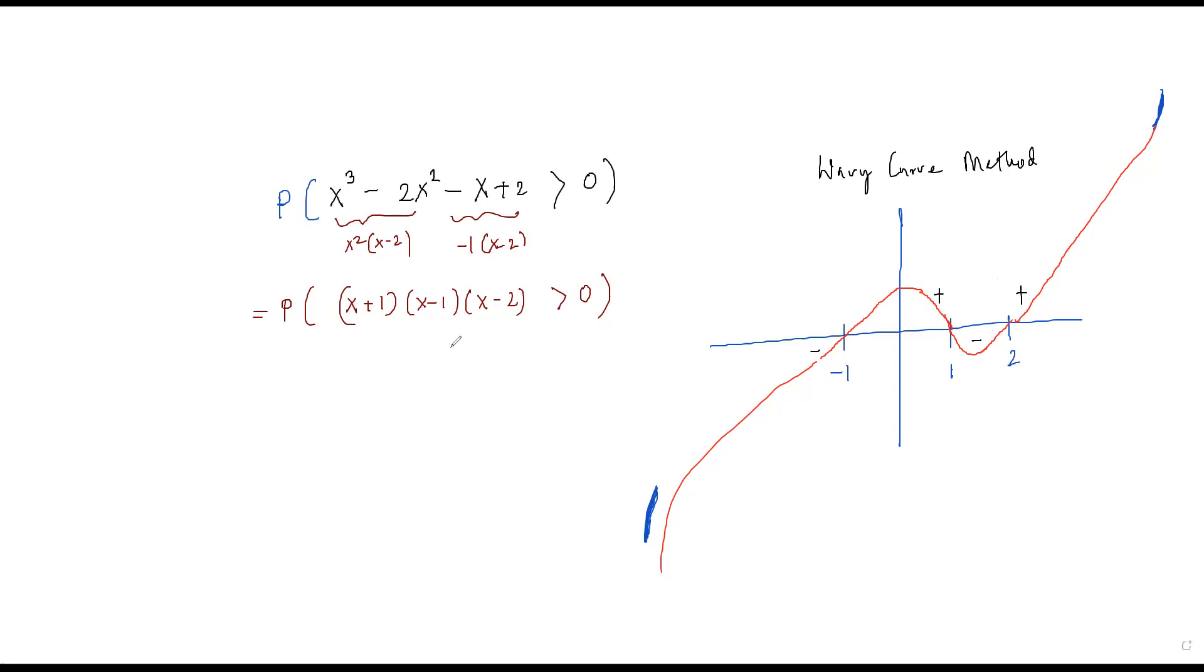So from this we get that this function is greater than 0 only if this is x and this is the f(x). Greater than 0 only in this region, right? Let me mark it. Only in this region and this region. So how do you write it down? It's greater than 0 when x is less than 1, greater than -1, union the event x is greater than 2. It's an event. Understand this. All these things are events.